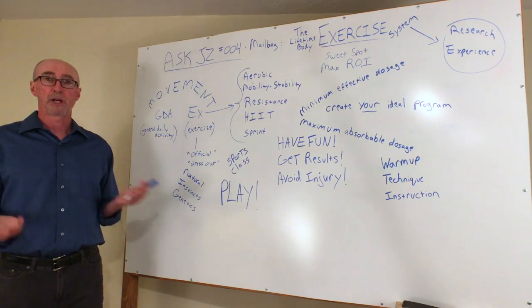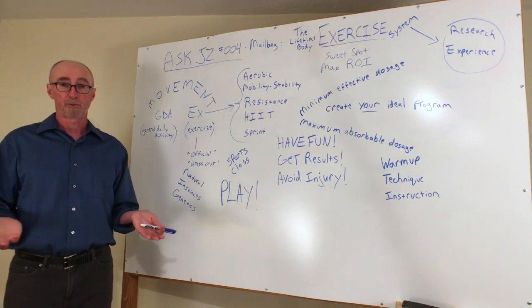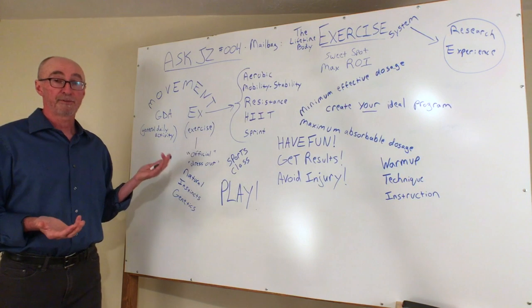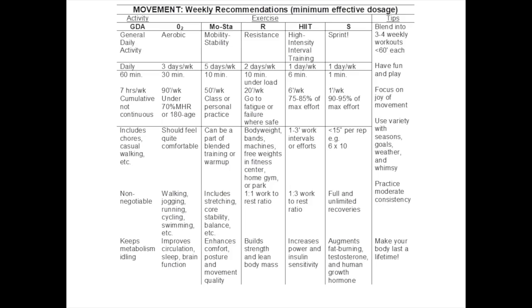We usually dress out for exercise, and we differentiate it from more casual forms of movement. The different types of exercise are isolated into five distinct categories, each with its own unique set of requirements and contributions to our conditioning.